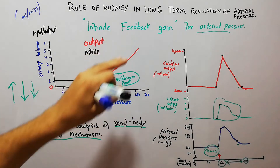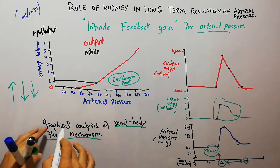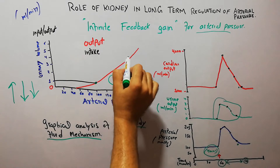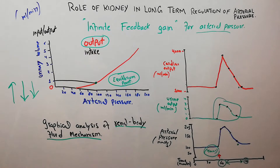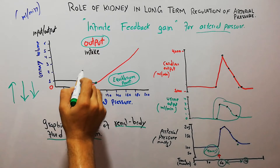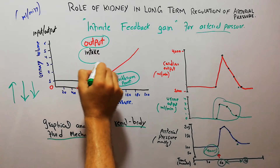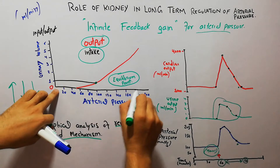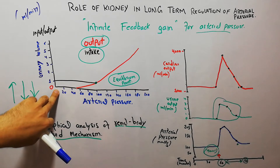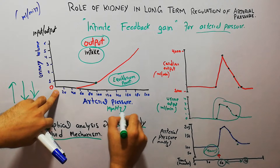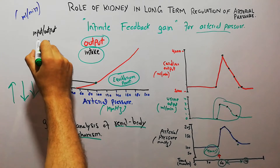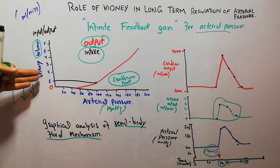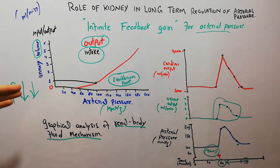The infinite feedback gain system, when shown in graphical analysis, has two components. One component of the graph is the renal output, and the other component is the intake of salt and water. On the x-axis of this graph we have the arterial pressure in mmHg, and on the y-axis we have the urinary volume — or it may be the intake or output volume of fluid.